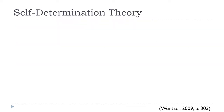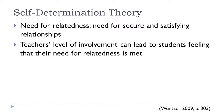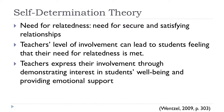Self-determination theorists explain that people have basic psychological needs. One of these needs is a need for relatedness — that is, a need for secure and satisfying relationships. Teachers' level of involvement can lead students to feel that their need for relatedness is met. Teachers express their involvement through demonstrating interest in students' well-being and providing emotional support.